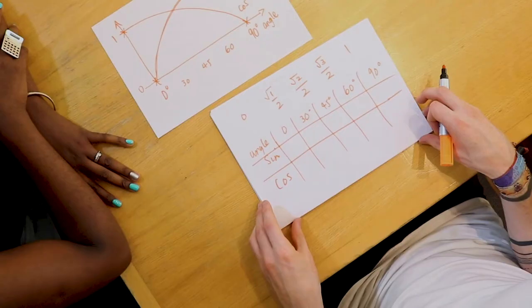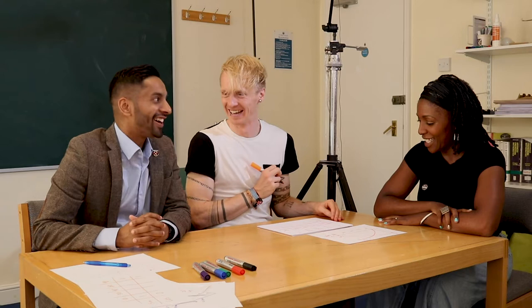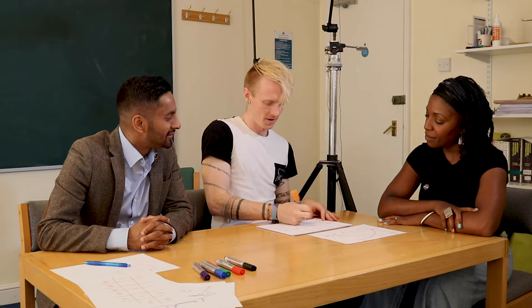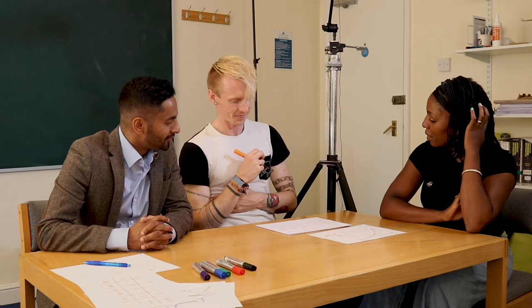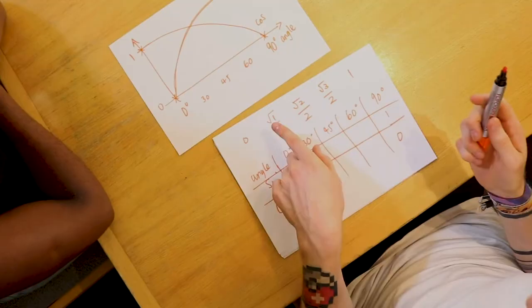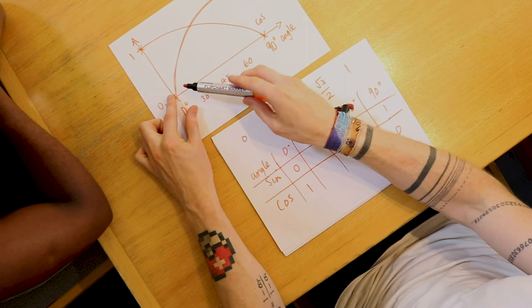And then what we can do now is we can actually use the graph that we have here to fill in the table and get all of these values. Bobby, you can have the easy ones, the end points. At 0, I'm fairly confident it's 0. For sine. And then for cos, we know that it's going to be 1. Those ones are easy to remember and we've got that. We need to know the graph anyway. And then, as we can see on our graph, sine ends up at 1 and cos goes down to 0.